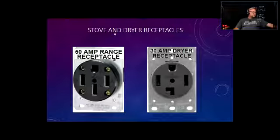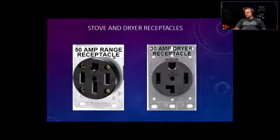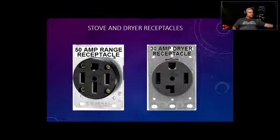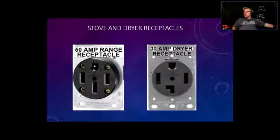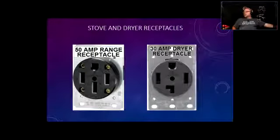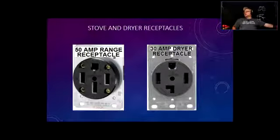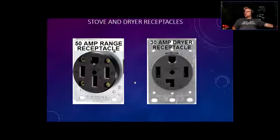Stove and dryer receptacles – in the last lecture we looked at some footprints for different voltage outlets and different receptacles at different amperages or current-carrying capacity. Here on the left is an example of a 50-amp receptacle – that's a stove outlet – which takes 50 amps at 220 volts. And this is the 30-amp dryer receptacle; the dryer doesn't need as much as the stove, which needs more heat.